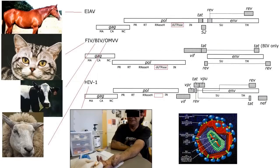HIV is a lentivirus on the basis of its genome and life cycle. It's not all that unusual for the lentiviruses — it infects immune cells, primarily CD4-positive T cells and macrophages. The other lentiviruses pursue similar, if slightly different, life cycles. There are lentiviruses that infect cats, goats, horses, sheep, cows, and monkeys.